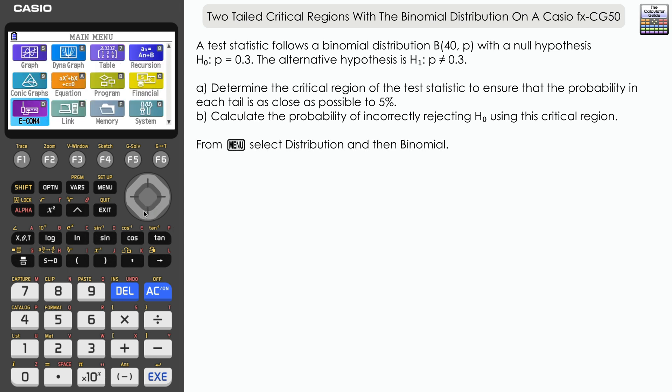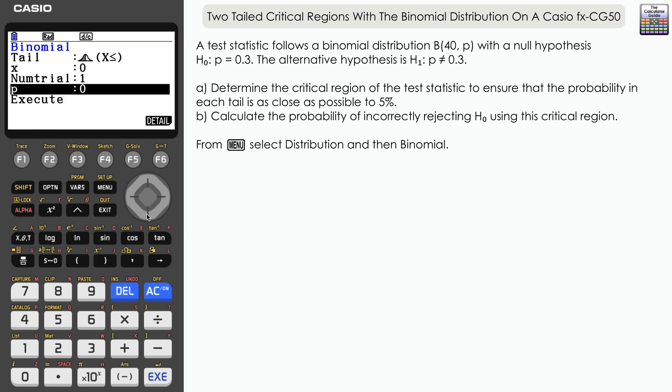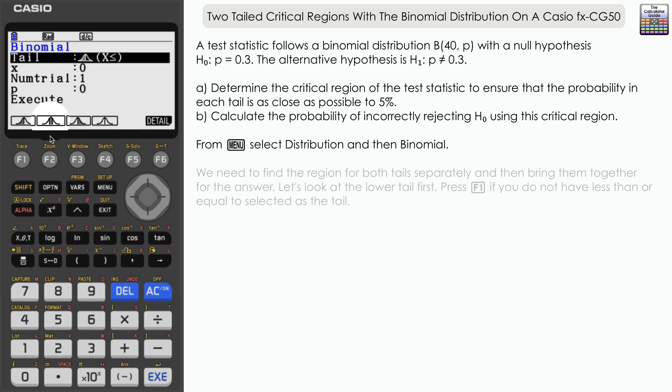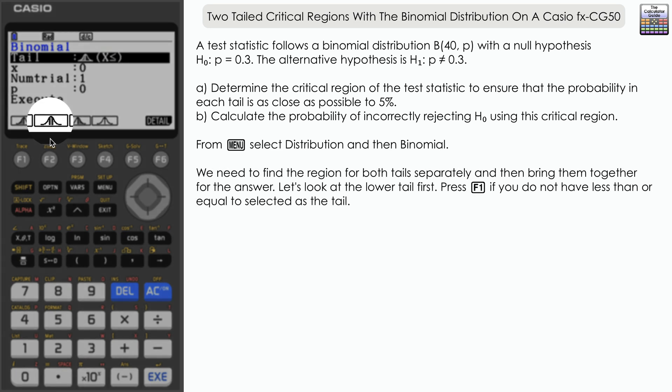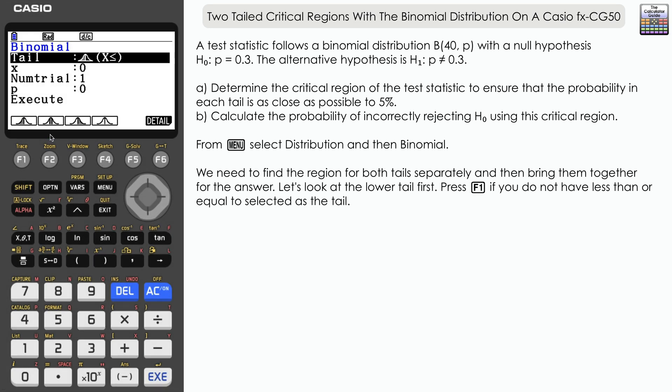From the menu, let's go to Distribution. I have the default settings here; you may have previous values stored. We're not able to use the central region to find both tails simultaneously because the calculator doesn't know exactly where to put that centralized region. So you have to find the lower tail and upper tail individually and then put those regions together.